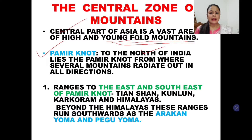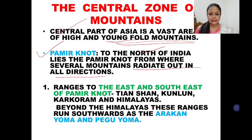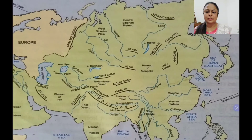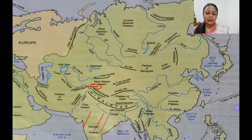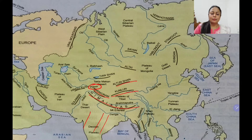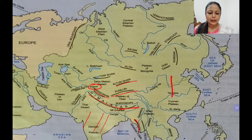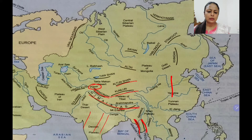To the north of India lies the Pamir knot, from where several mountains radiate out in all directions. Looking at the map, this is India, and to the north is the Pamir knot. You can see that mountains like Karakoram, Himalayas, Kunlun, and Altun Shan are moving out from the Pamir towards the east. The Himalayas further extend into Myanmar, where they are known as Arakan Yoma and Pegu Yoma.